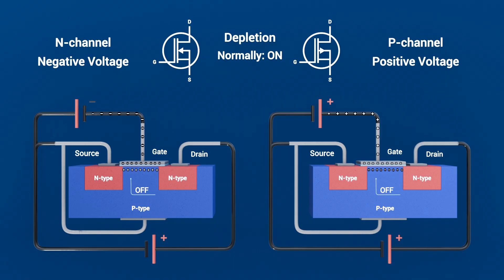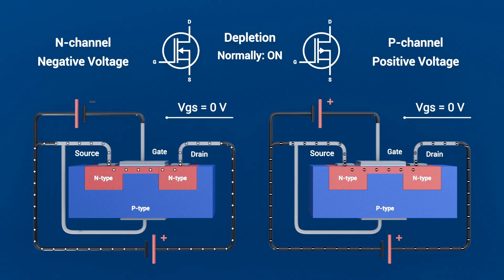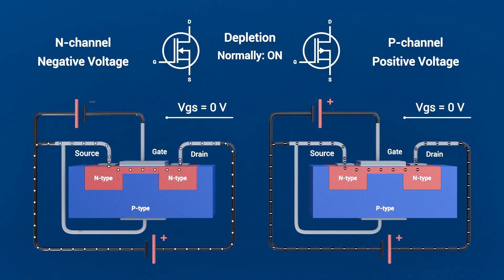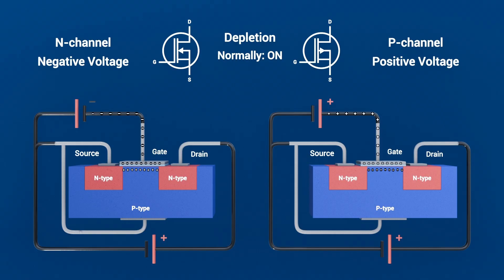Its transfer curve starts at a finite drain current at zero bias and falls as you apply the reverse gate voltage. Because of this normally-on characteristic, depletion MOSFETs find niche use in analog circuits, such as constant current sources or depletion load logic, and in RF gain stages, where a default conduction path is advantageous.